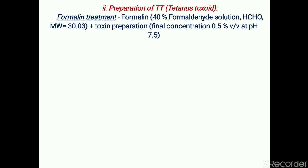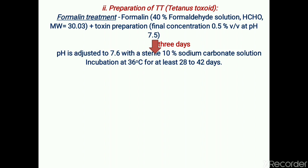In the next step, preparation of tetanus toxoid is done. Formalin — which is 40% formaldehyde solution — is mixed with the crude toxin preparation so that the final concentration of formalin is 0.5% v/v at pH 7.5. This step is for the inactivation of toxin, meaning conversion of toxin to its inactive form called toxoid. This treatment takes approximately three days. The pH is adjusted to 7.6 with sterile 10% sodium carbonate solution, which is used as the neutralizing agent for formalin.